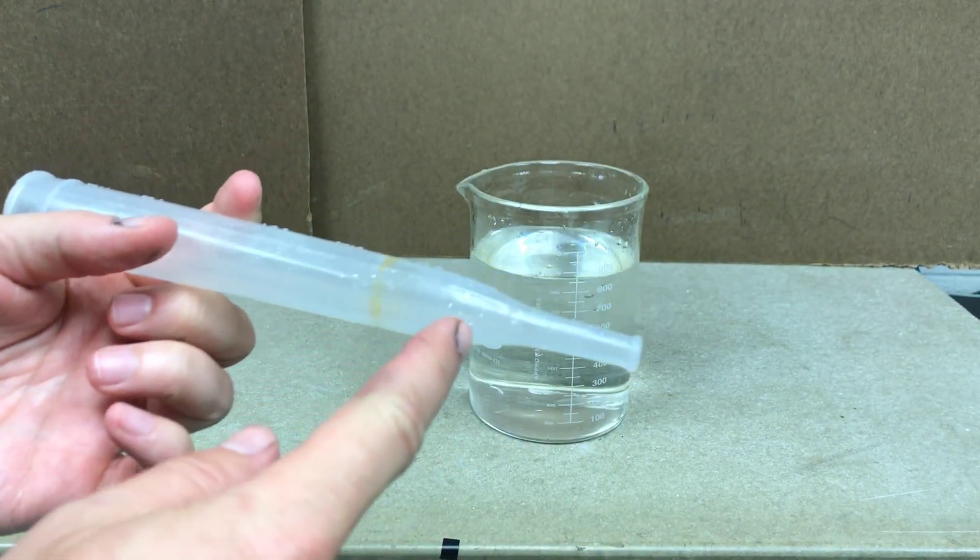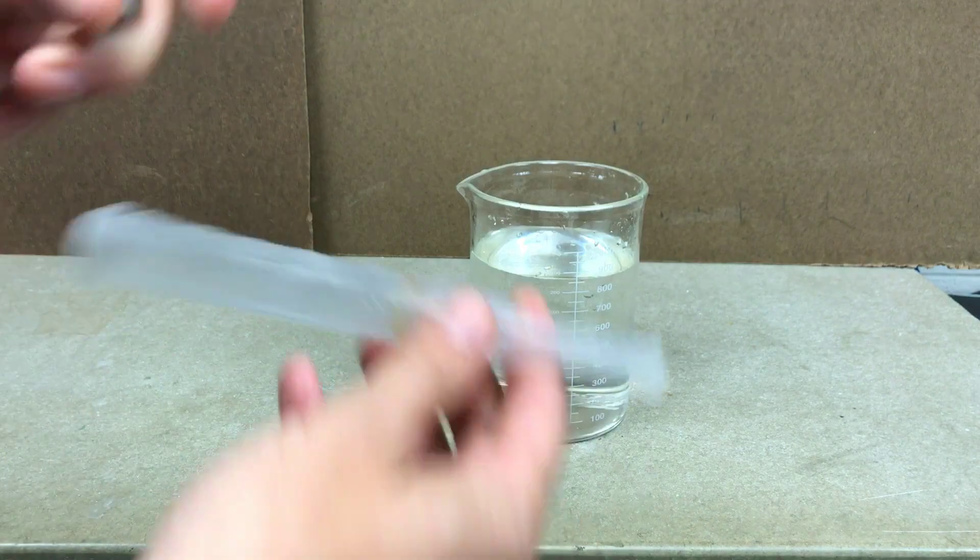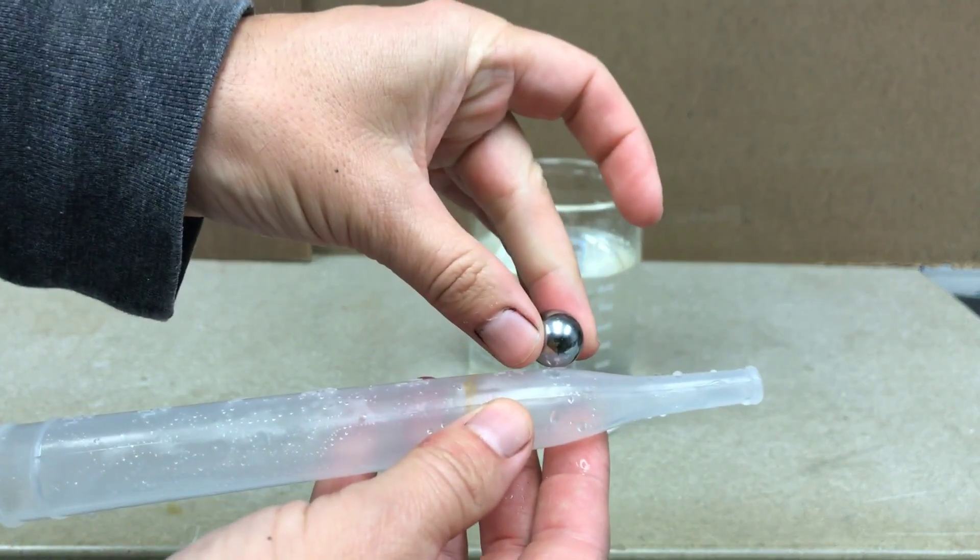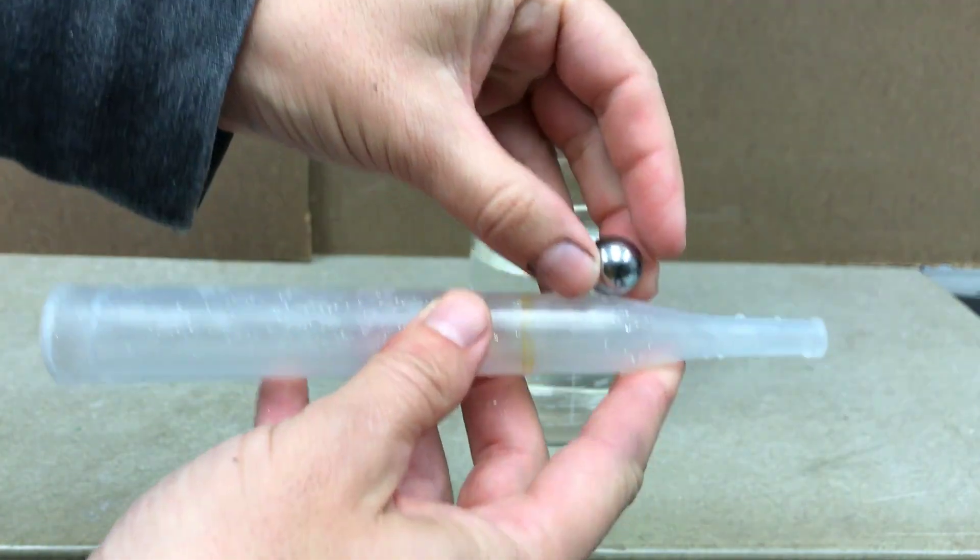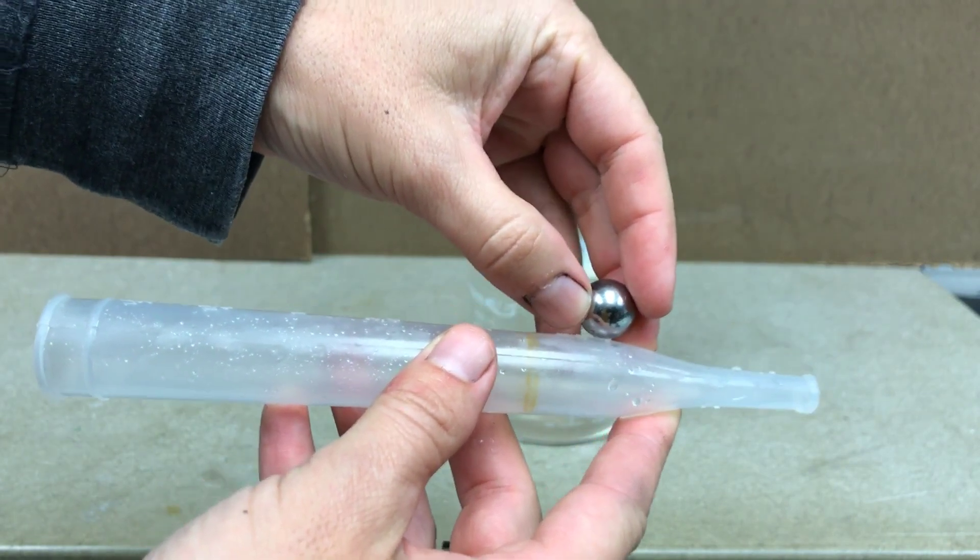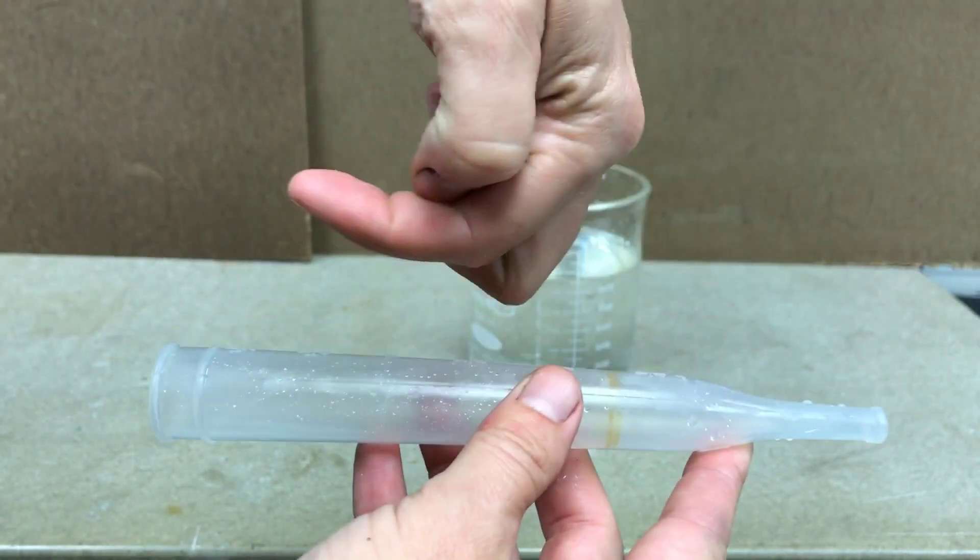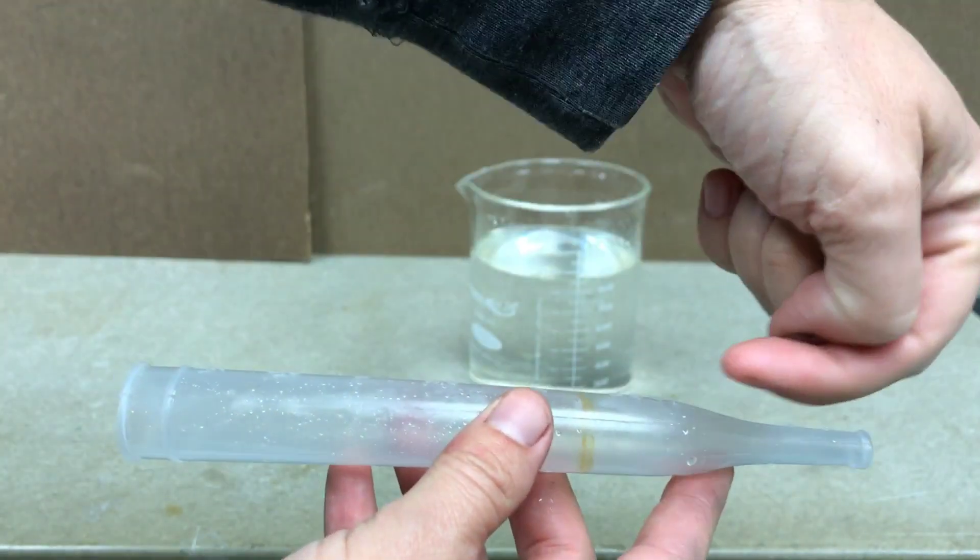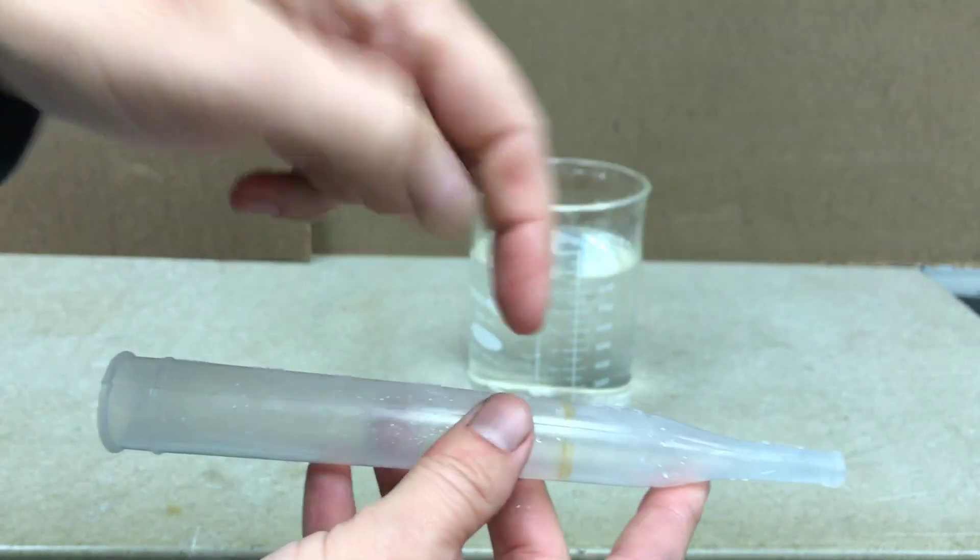And the key here is that this is tapered at the end. So when I put the ball in, it gets stuck. And here is the key to just about all pumps. They have to make a way for the water to go one way and not the other. So if I can get the water to go this way, but not that way, I can pump it.